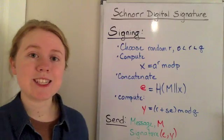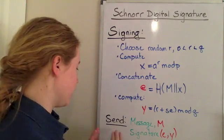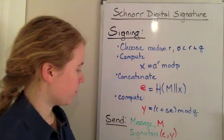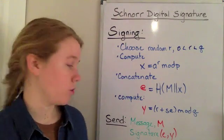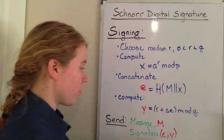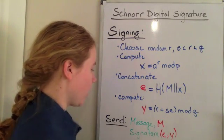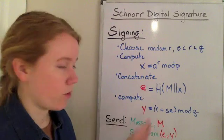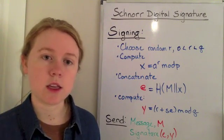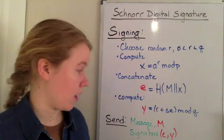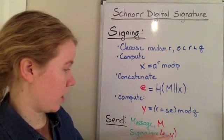What we want to then send is the message m. But we also want to send the signature, which is two parts. We want to send e and y in that order, and that's our signature for this message, so that the receiver can verify that it was you who sent the message.